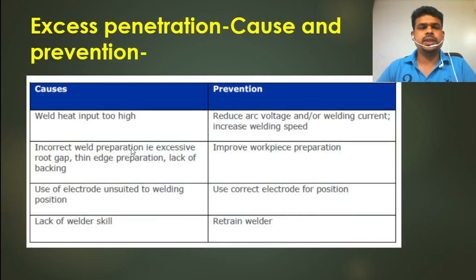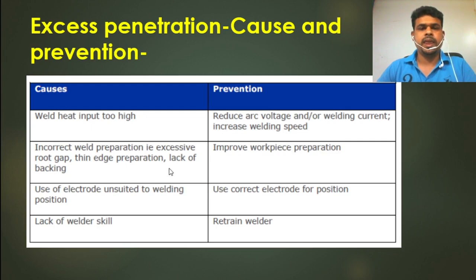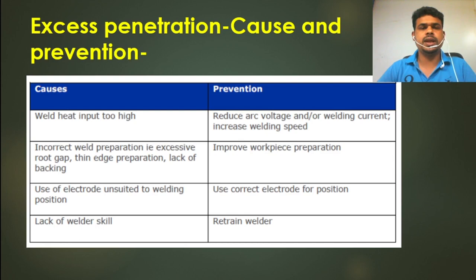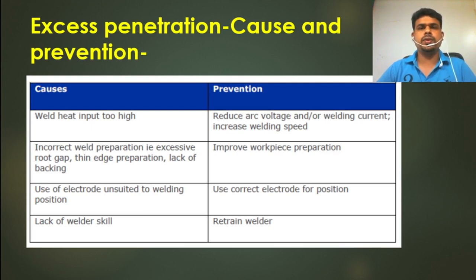Causes and prevention for excess penetration: heat input too high — reduce voltage or welding current and increase travel speed. Incorrect joint preparation such as root gap too thin, incorrect preparation, or lack of backing. Faulty electrode or unskilful welding operation — use correct welding operation. Lack of weld backing. Basically, if heat input is high and travel speed is slow, this is the primary cause of excess penetration.